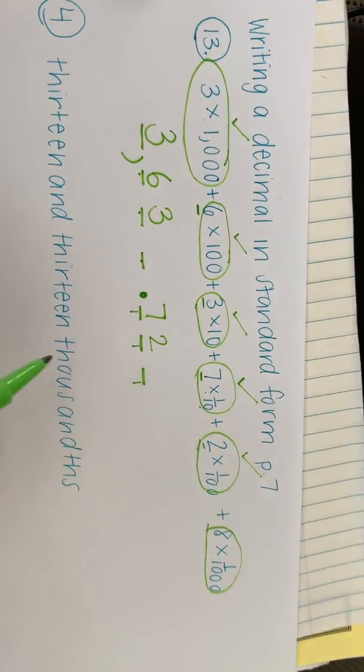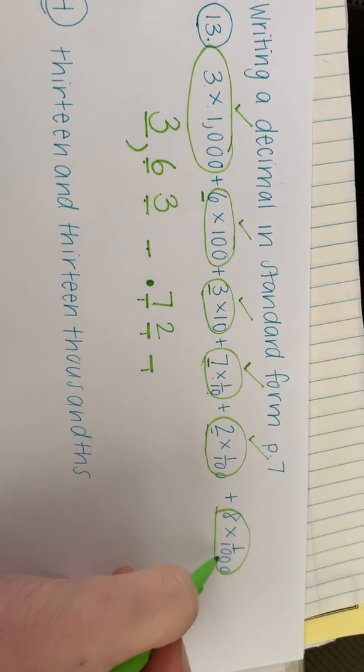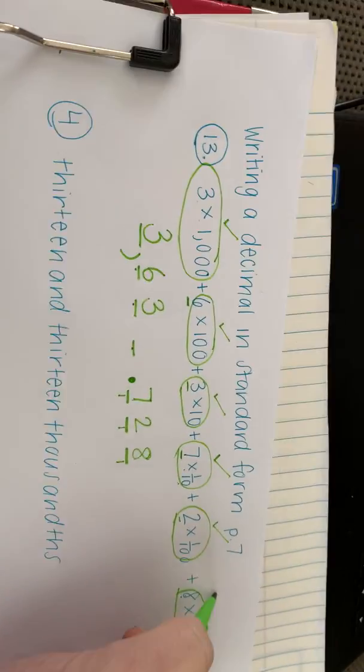And we've got 8 times 1 thousandth. So in our thousandth place, we're going to put an 8. And check it off. We're done.